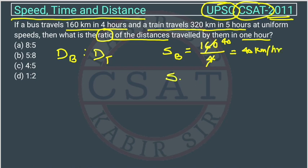And similarly, we will calculate the speed of train will be equal to 320 upon 5. So, from 5, we can cancel this 5, 6 is 30 and 5, 4 is 20. So, this will be 64 kilometer per hour.